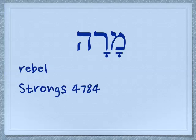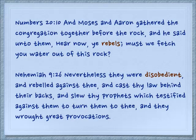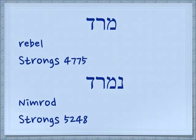In Numbers 20:10, Moses gathered the congregation before the rock and said, 'Hear now, ye rebels, must we fetch you water out of this rock?' In Nehemiah 9:26, 'Nevertheless they were disobedient and rebelled against thee, and cast thy law behind their backs, and slew thy prophets which testified against them to turn them to thee, and they wrought great provocations.' Here the same root is translated as 'disobedient,' showing the people rebelling against Yahweh's law. There is also a different related word specifically translated as 'rebelled.'